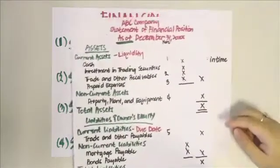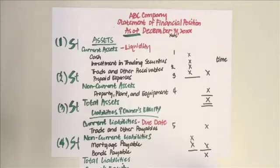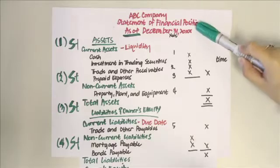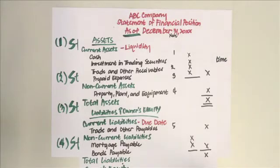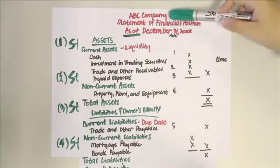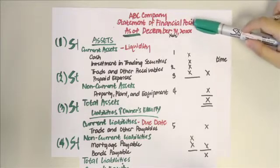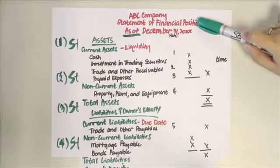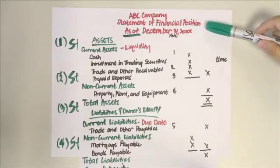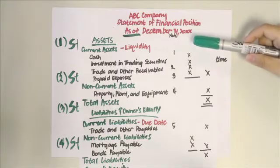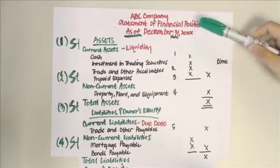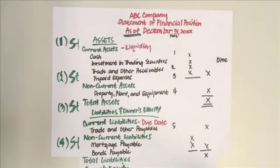Now we're going to take a look at the statement of financial position and analyze its different parts. First, we have the heading, which is composed of three lines — don't forget to include this on your paper, especially during quizzes, as missing it will cost you marks. The first line is the company name, the second line is the type of report, which is the statement of financial position, and the third line shows the date: as of December 31, 20XX.